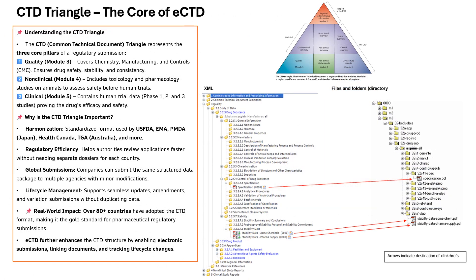Imagine your drug application balanced on three powerful pillars — that's called the CTD triangle. First, we have quality, which is module 3. This covers chemistry, manufacturing and controls (CMC). Regulators want answers: how is the drug made, is it stable, can it be produced consistently? Next is non-clinical, module 4. Before a drug reaches humans, it is tested on animals to check its safety, toxicity and pharmacokinetics. Every insight here matters for ensuring the drug is safe for trials.